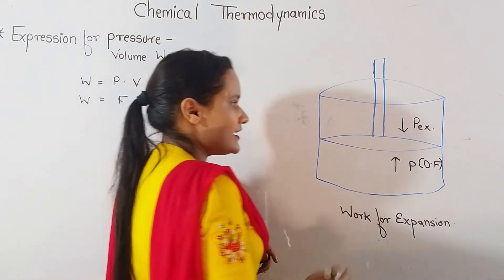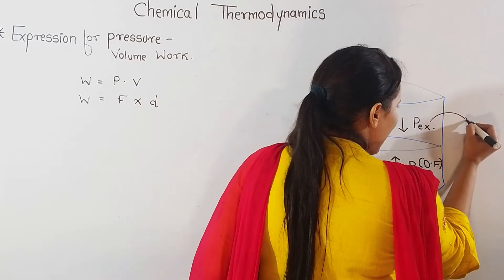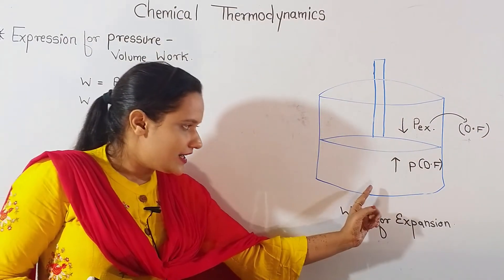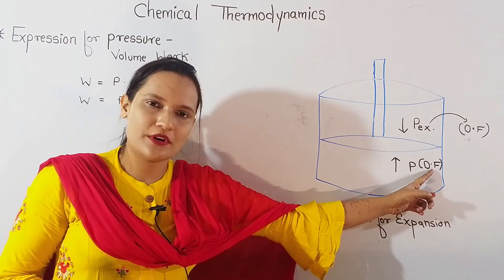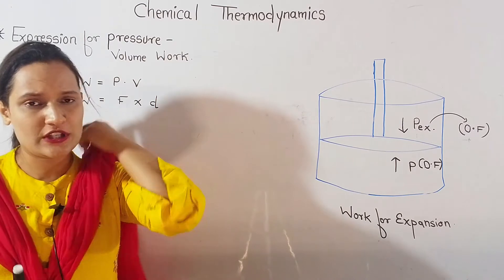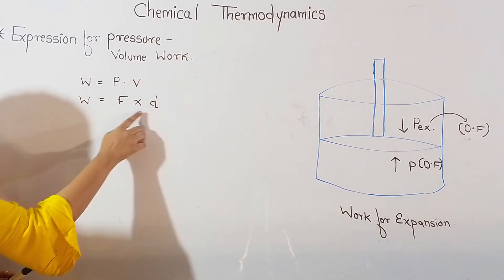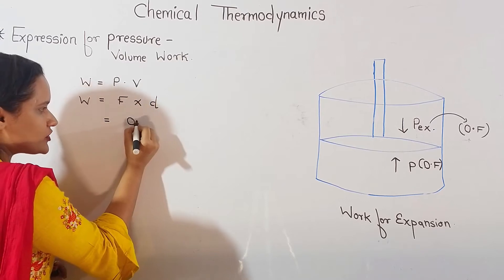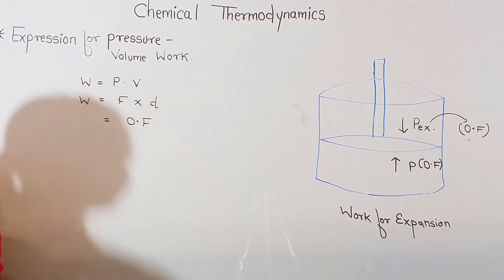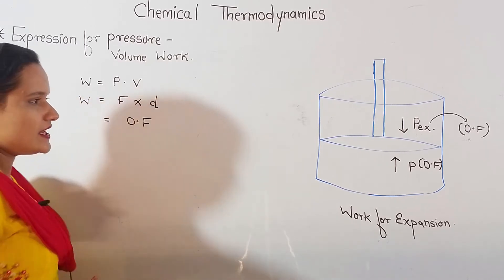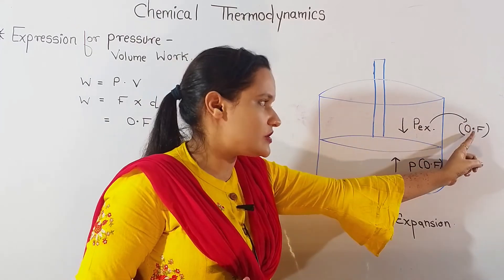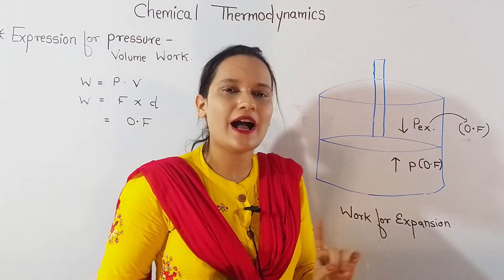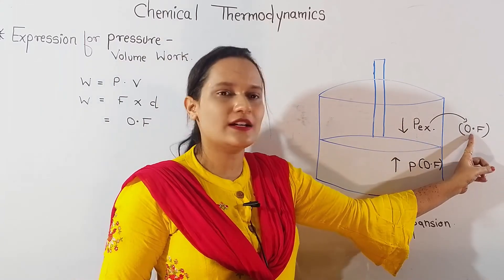At the same time, if my piston is going down, the force acting against it is called the opposing force. Now in the formula work = force × displacement, the force that acts here is the opposing force. Work always happens against the opposing force — if you don't apply external pressure, no work is going to happen.